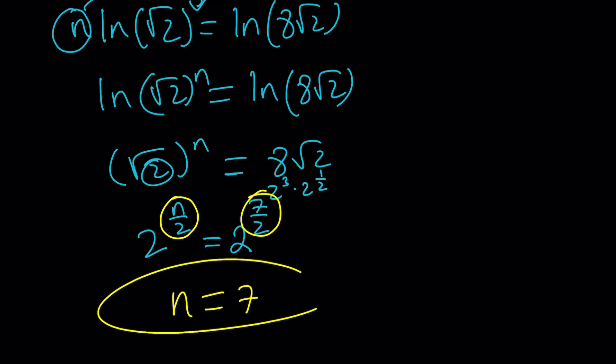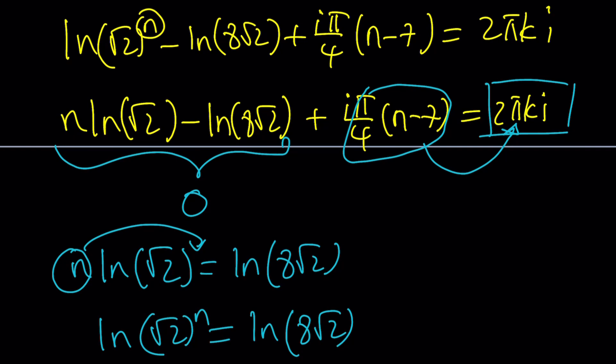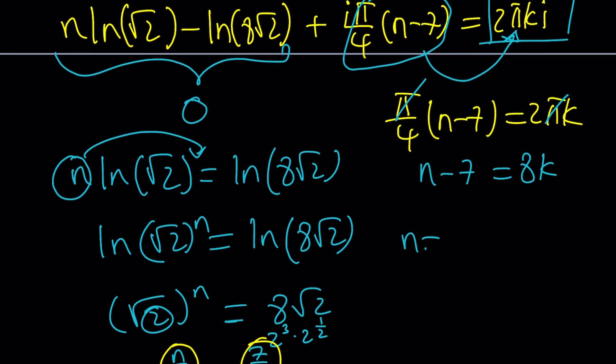But guess what? We have to check the other equation. Now we have π/4·(n-7) = 2πk. Of course, π cancels out, leaving us with n-7 = 8k, or n = 8k+7.